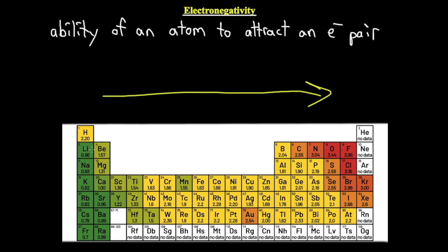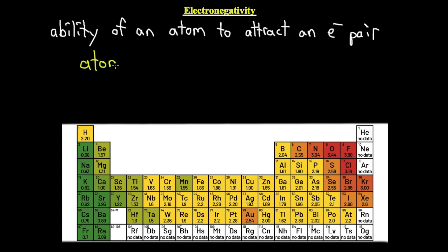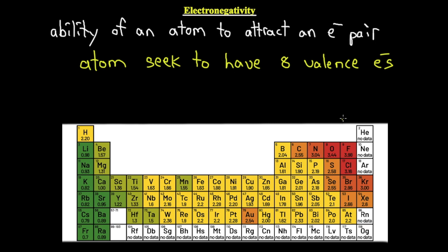Why is electronegativity increasing? If we compare lithium to fluorine, there's a huge electronegativity difference, although they are within the same period. The reason is because of the octet rule, which states that atoms seek to have eight valence electrons. Fluorine has nine electrons — two in the first shell, seven in the second — so it's only one away from a full octet. Therefore, all it has to do is gain one electron rather than lose seven in order to be stable. Energetically, it's a lot easier to gain one than to lose seven, giving it a greater ability to attract an electron pair.